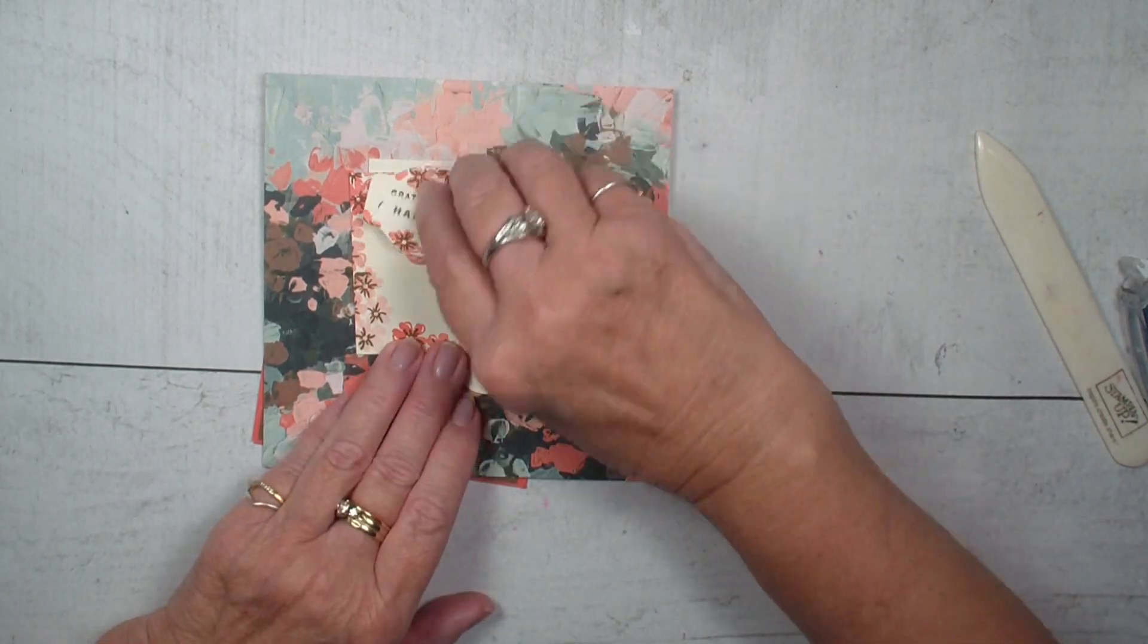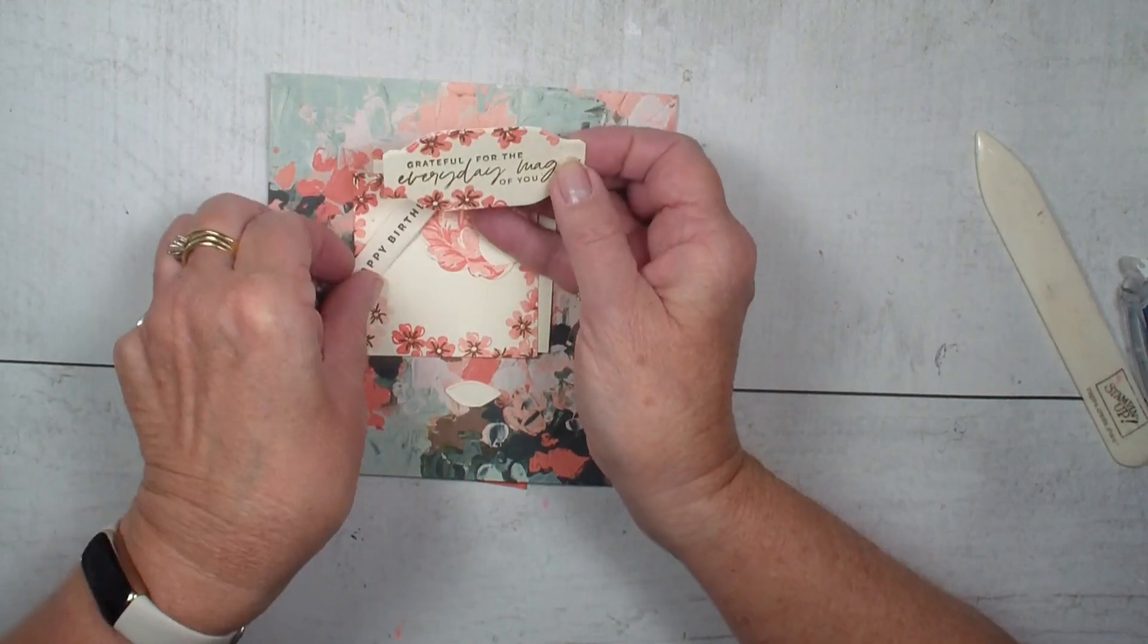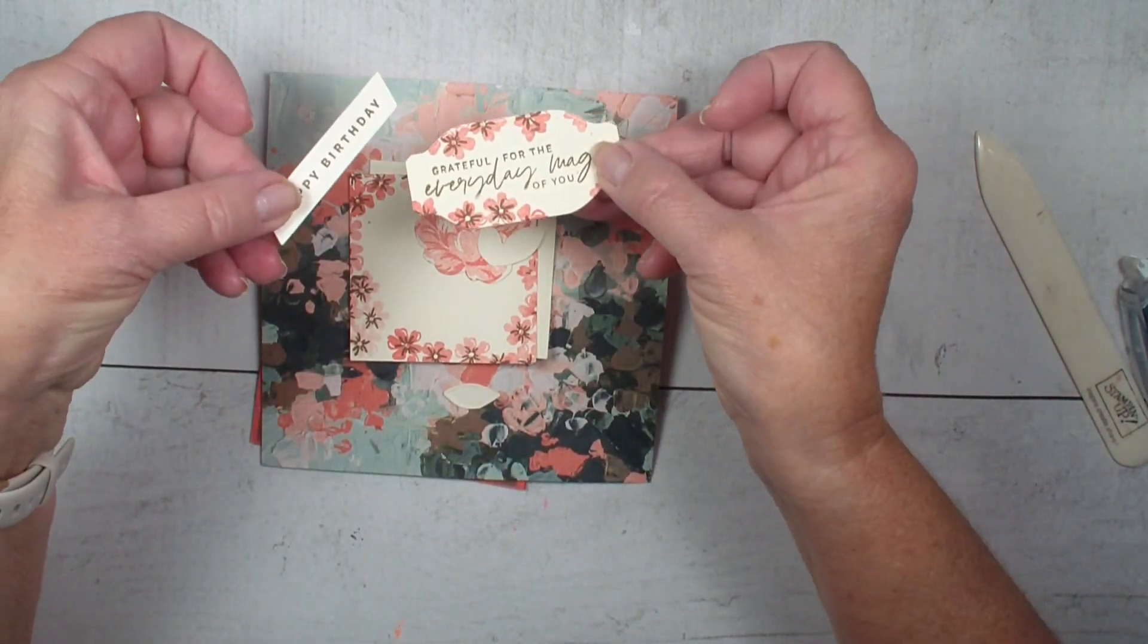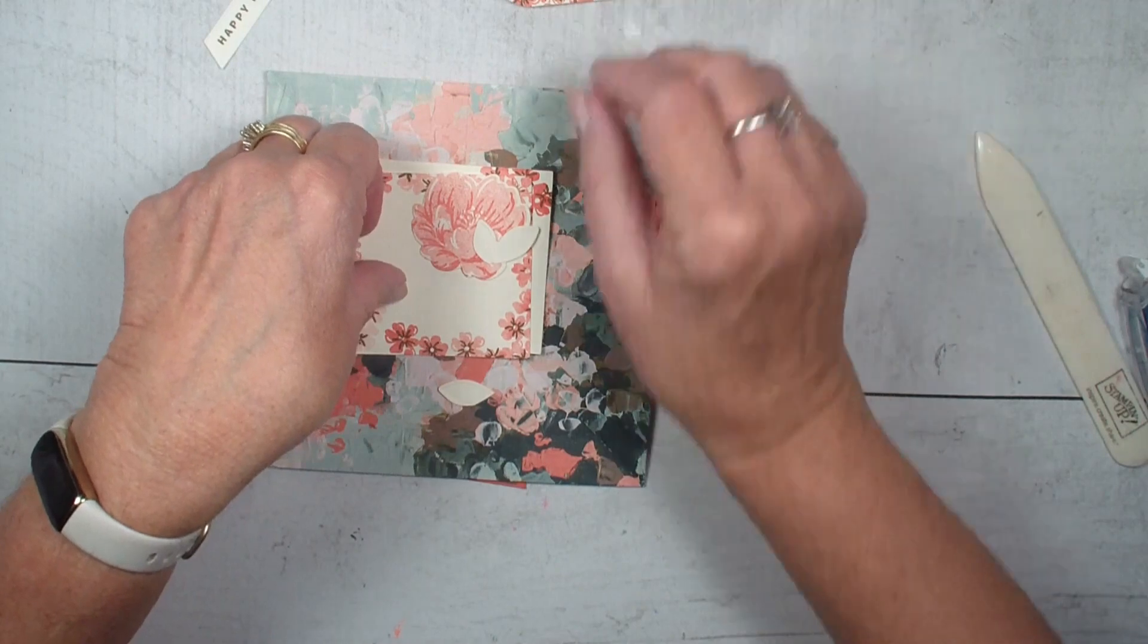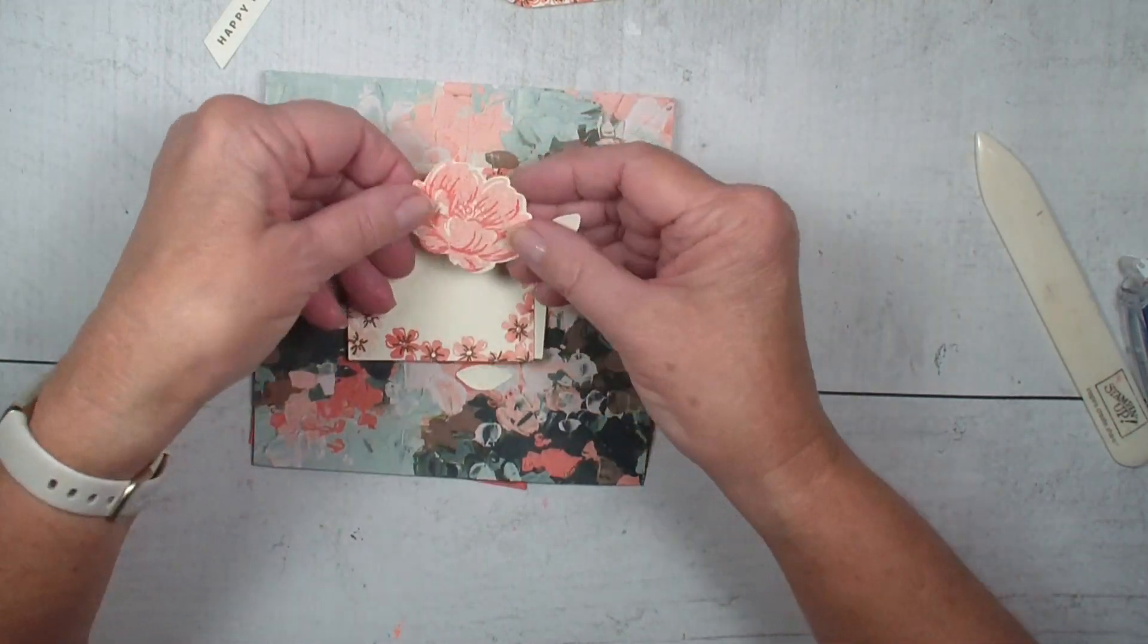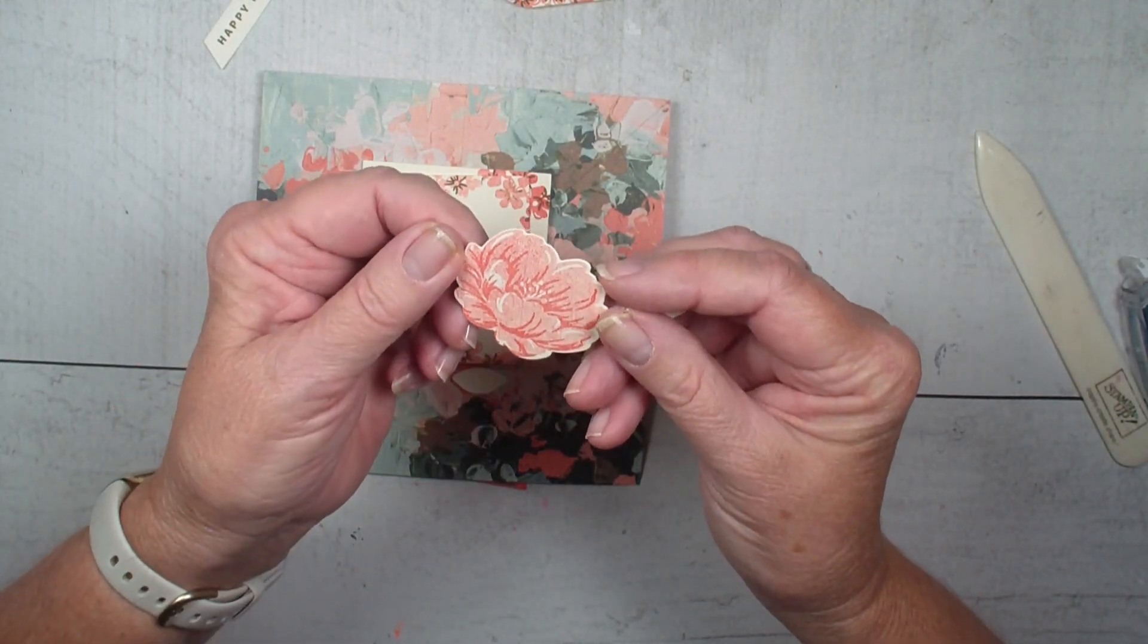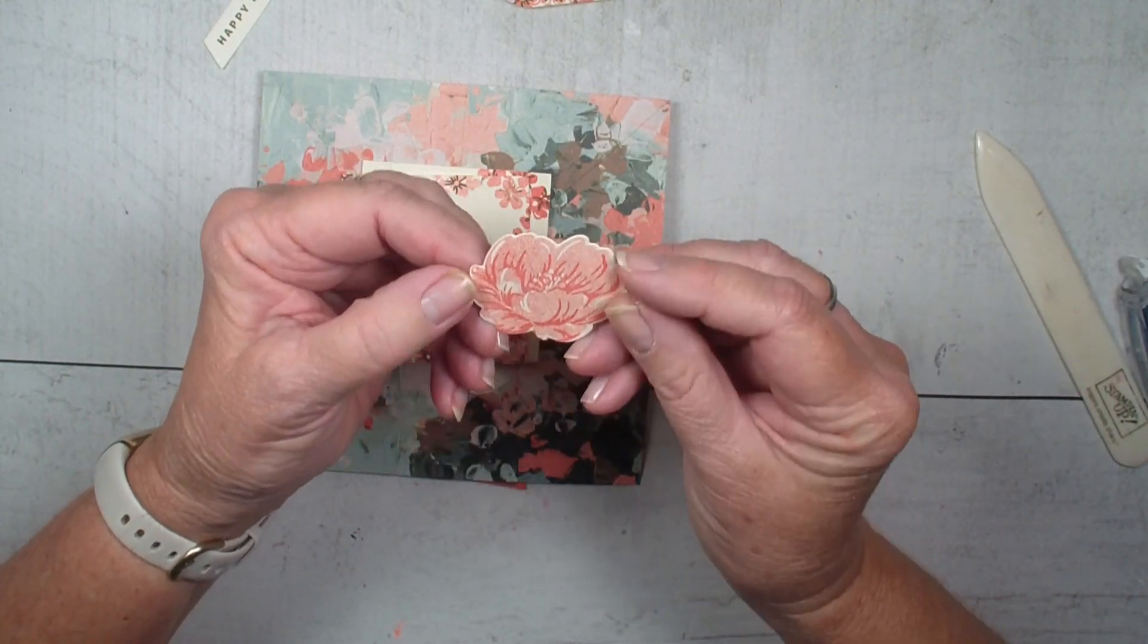I first used the Something Fancy bundle and stamped my different labels from that set. I then used the Two-Tone Floral Bundle and stamped my flowers. Calypso Coral, don't use that color a lot, but I love the boldness of it.